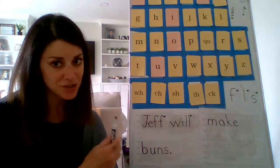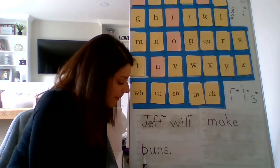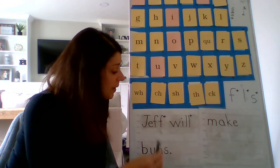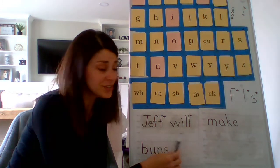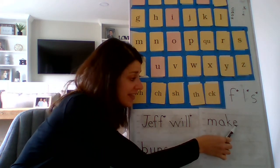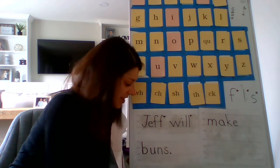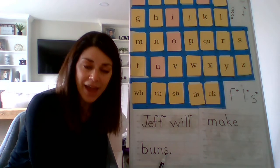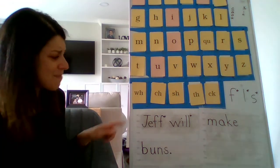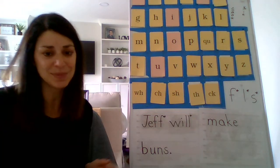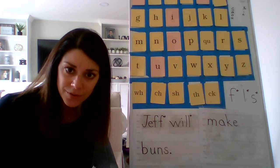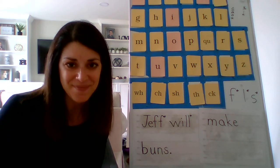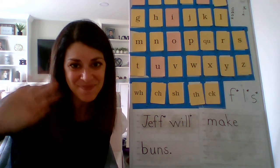Let's double check: Jeff will make buns. Awesome job with that, friends. You had two words with bonus letters. You had a word that needed that magic E at the end. And then you needed to remember to add an S to words that are more than one. A lot of memory going on in this sentence. You guys did fantastic. This was a little bit of a longer video today, so go ahead, relax a few minutes before you finish up your work for the day. Great to see you guys today. Bye.